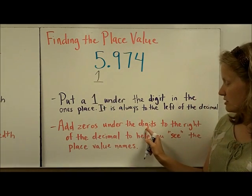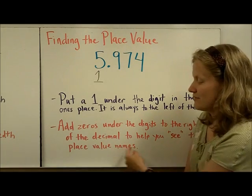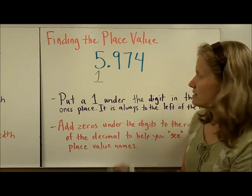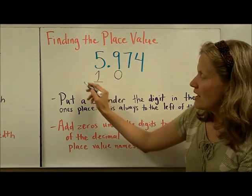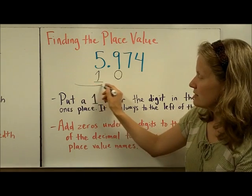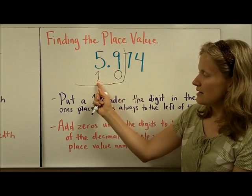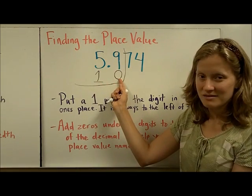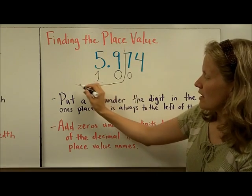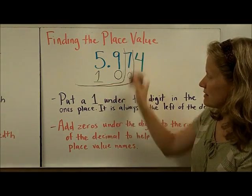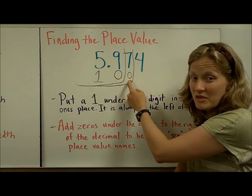Add zeros under the digits to the right of the decimal to help you see the place value names. So we're going to do it one at a time. I'm going to add a zero under this digit that's to the right of the decimal. And then if I look like this, that shows me that that nine is in the tenths place. Then if I add another zero and I draw my line like this, that seven is in the hundredths place.